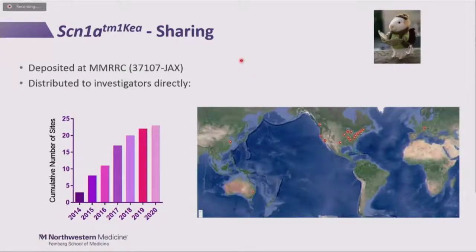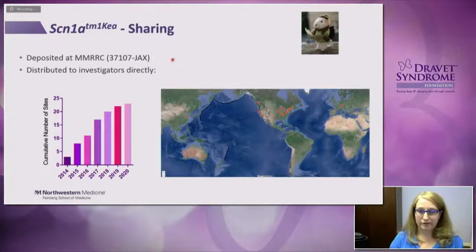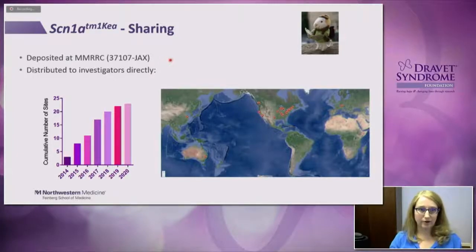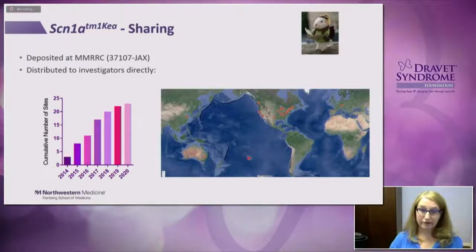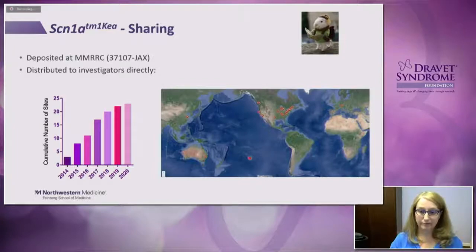The mouse model that we developed in my lab was deposited at the MMRRC at the Jackson lab, so people can order it directly. Over the last six years, we've actually distributed mice to over 20 labs at different places across the world. This is really a force multiplier because if we send these mice out to all these different labs, we can learn a lot more about Dravet syndrome and potential therapies than we could possibly do by ourselves.